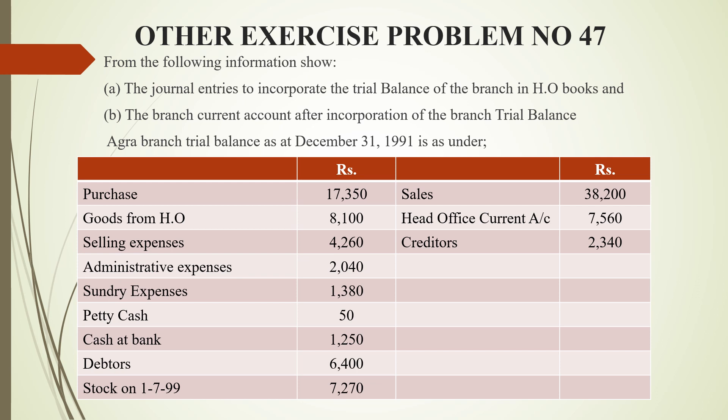When we incorporate branch books into head office books, we essentially merge them. For example, if a branch has earned a net profit of 100 rupees, that 100 rupees appears in the head office general profit and loss account. So if the head office also has 100 rupees, the total becomes 200 rupees for the overall organization.